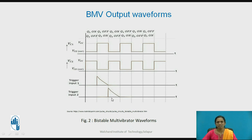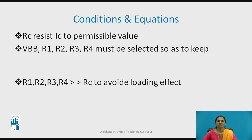To return to the original stable state, you apply another trigger pulse, and you can observe the variation in the output. This is a continuous process, provided trigger pulses are applied, and you obtain the two stable states alternately.